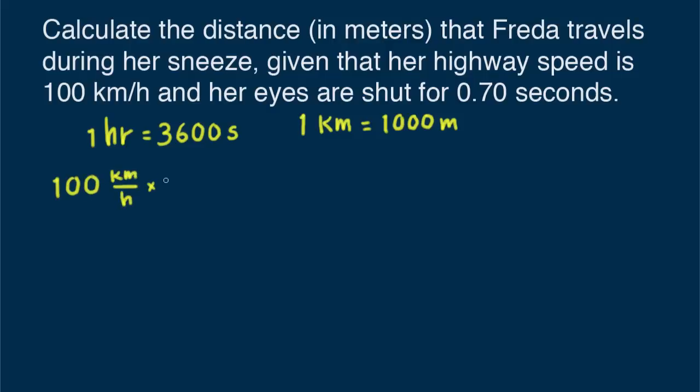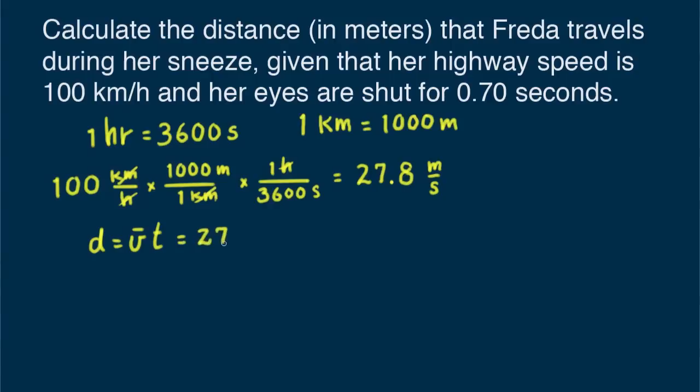So we say a hundred kilometers per hour times one thousand meters over one kilometer, then we multiply it by one hour divided by thirty six hundred seconds. Then we see it's twenty-seven point eight meters per second. That's our speed in meters per second. Our calculator tells us that the distance covered is twenty-seven point eight meters per second times zero point seven zero seconds equals nineteen point five meters.